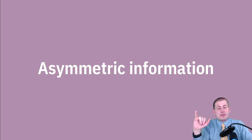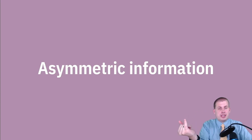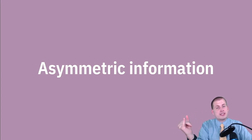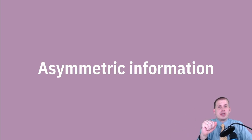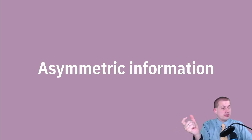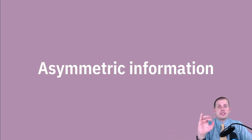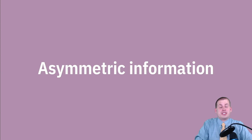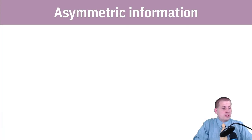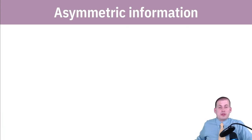As a result, behavior starts changing and incentives start getting aligned differently when there is asymmetric information. In the Marginal Revolution videos you watched in preparation for this class, I talked about two different types of asymmetric information, and we'll briefly review those here.